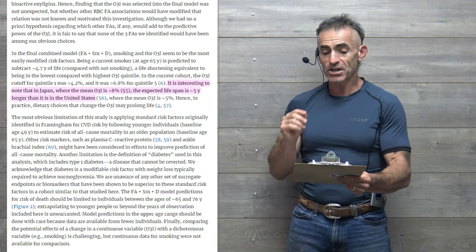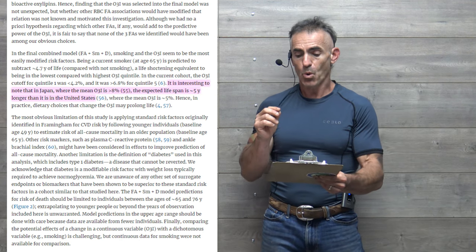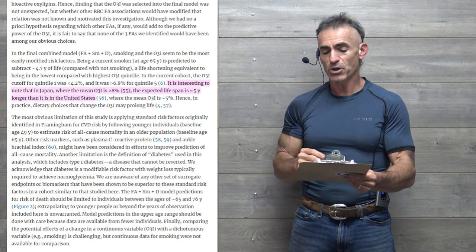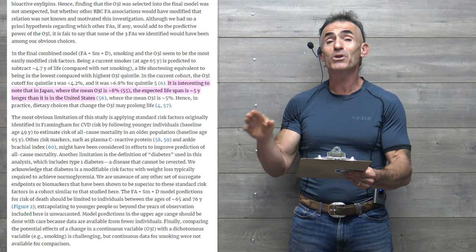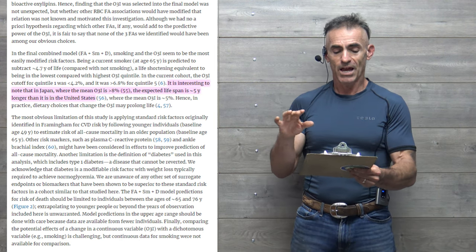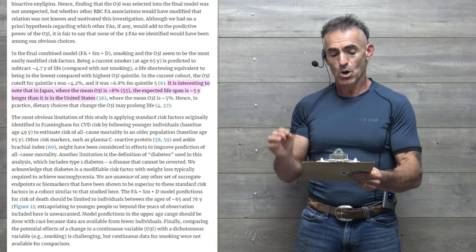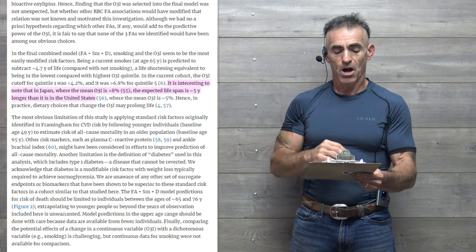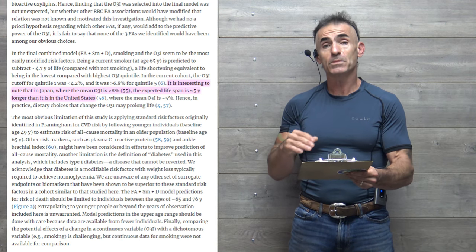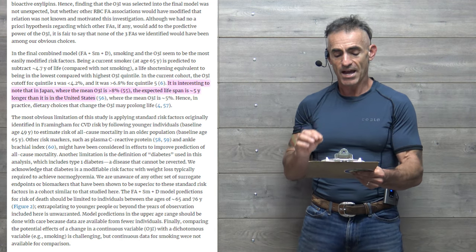It is interesting to note that in Japan, where the mean average omega-3 index is greater than 8 percent, life expectancy is approximately five years longer than it is in the United States, where the mean average omega-3 is approximately five percent. Hence, in practice,